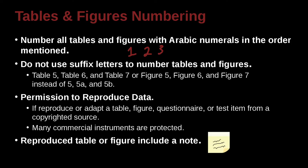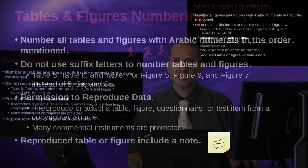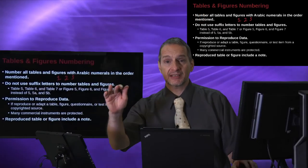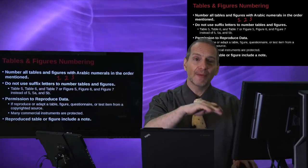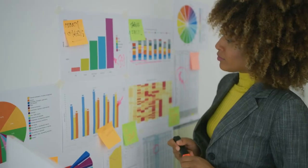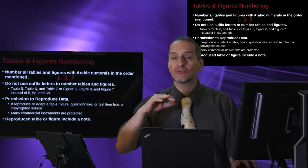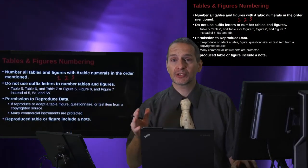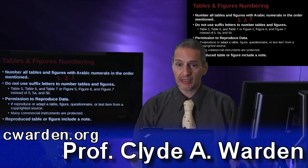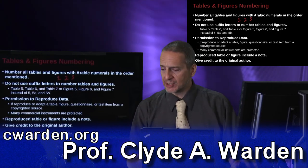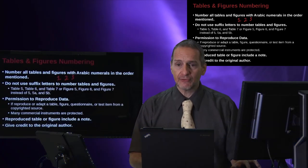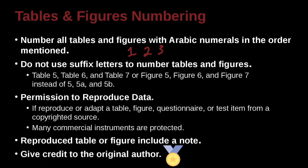So what's the minimum you need to do? Minimum is you need to include a note. A note will say something like, this table is adopted from, or this table is an adaptation of, and you label who it came from, what article, what journal, who was the author, that kind of thing. That's the minimum you need to do. You need to give credit where credit is due.